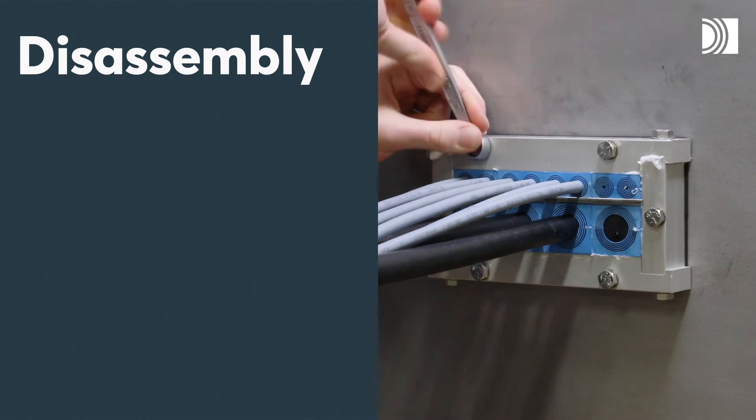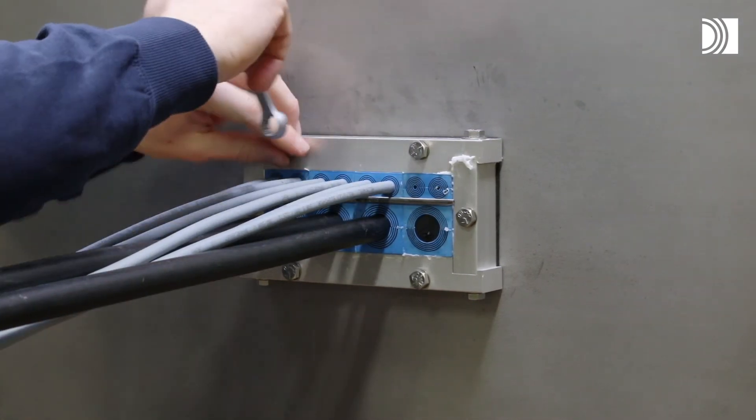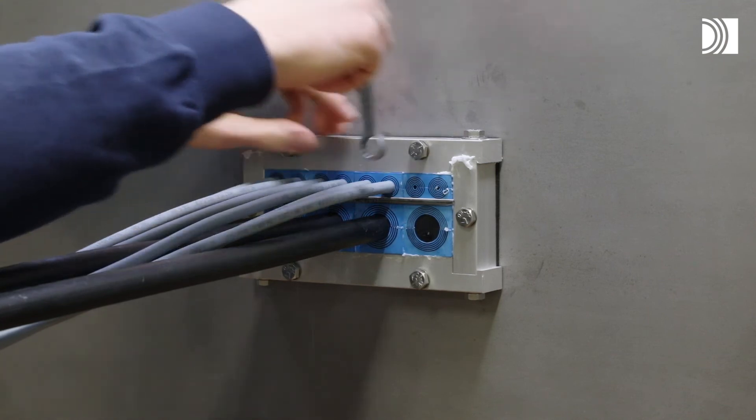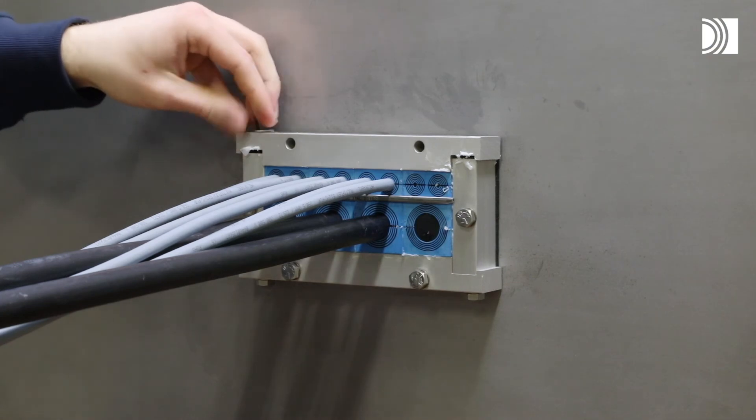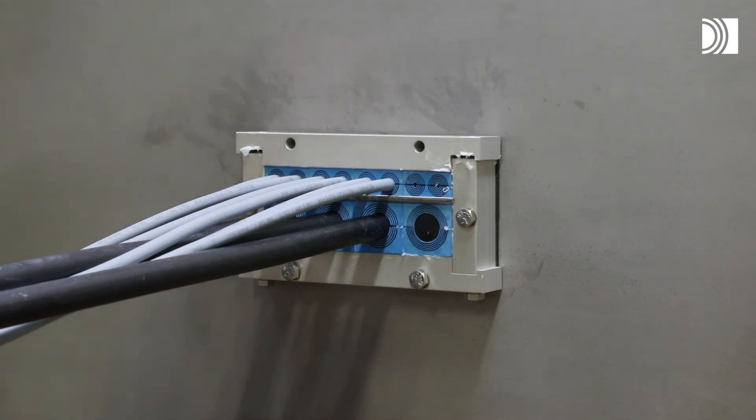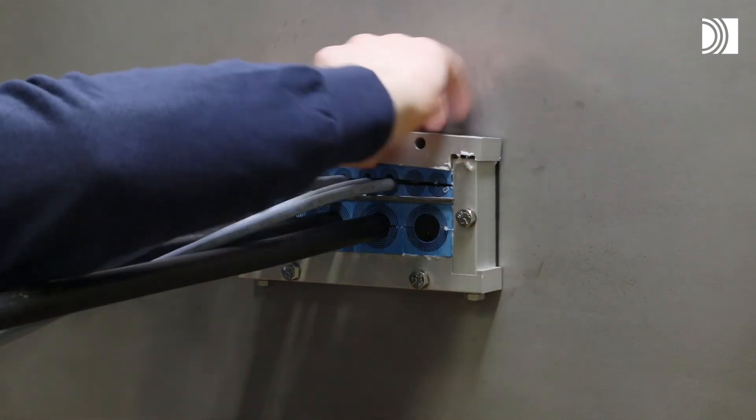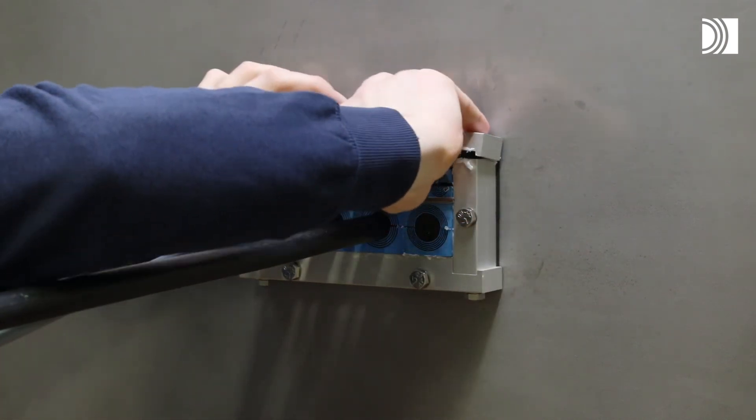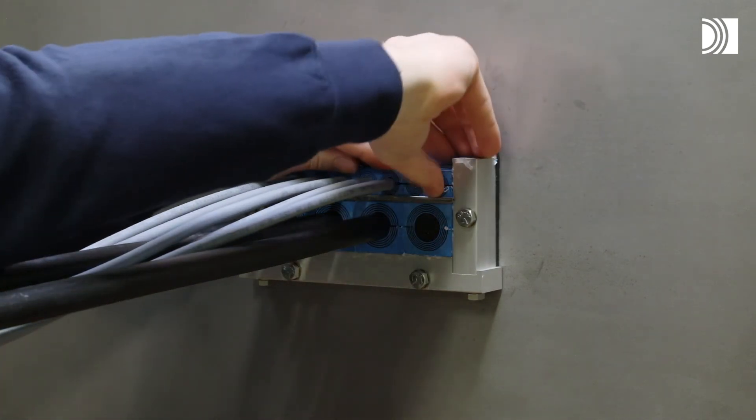Untighten the two screws which hold the upper long part of the frame to the structure alternately. Untighten the two screws for the upper long part alternately. Remove the upper long part. Remove the components.